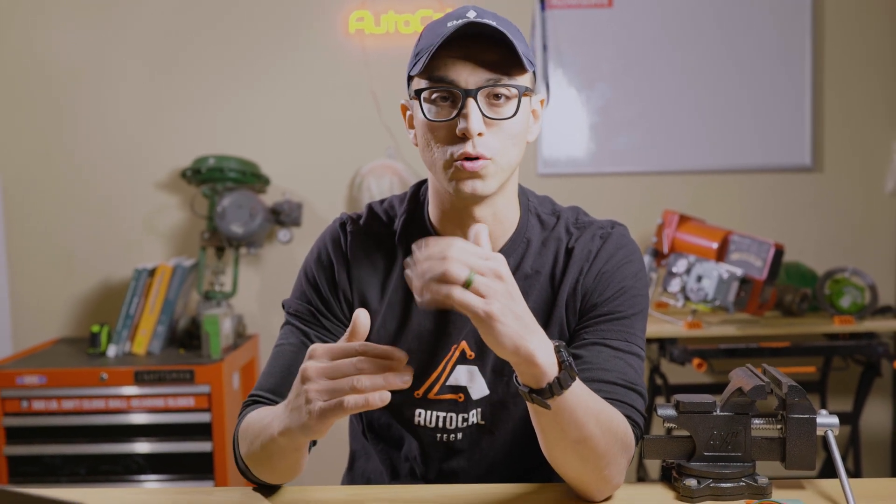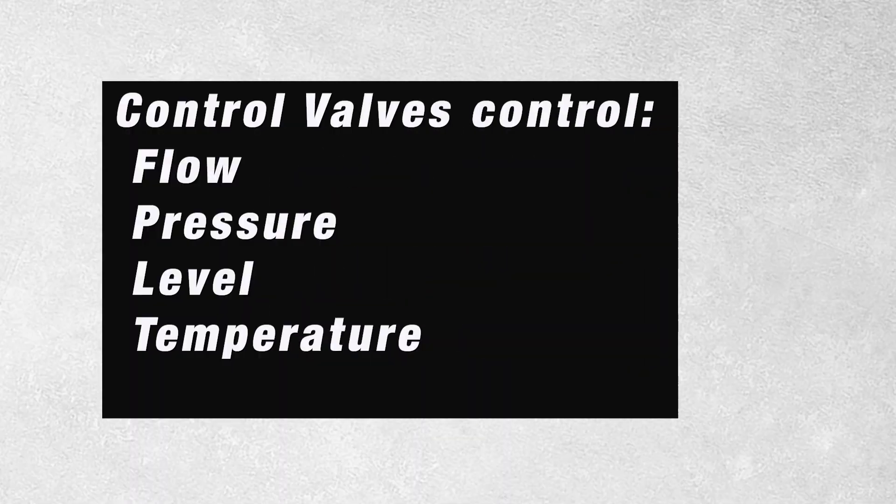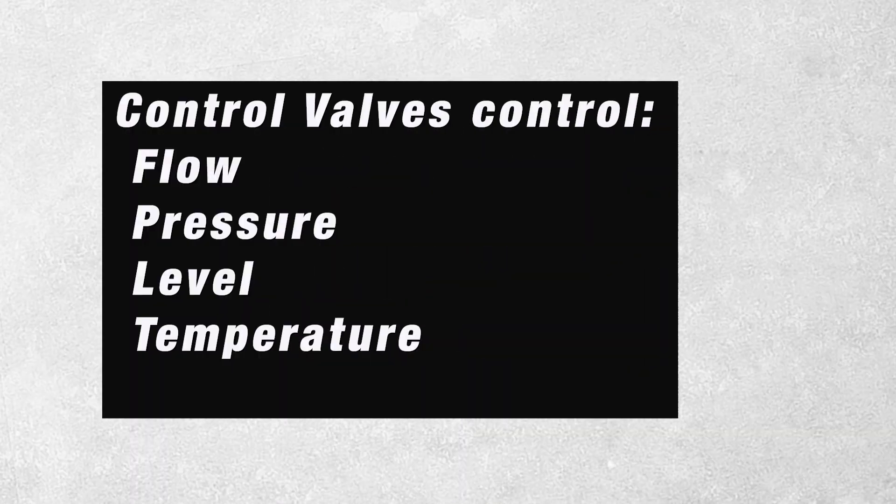The controller calculates what the error is and outputs a signal to the final control element to fix that error. The final control element is usually a control valve — that's how a control valve knows whether to open a little more or close a little more. Right behind me I have a Fisher control valve and on my other side I have a Camflex control valve. One is a rotary and the other is reciprocating, but they both open and close to control flow rate, level in a column or tank, or even temperature.